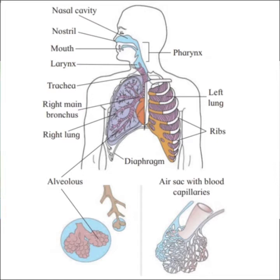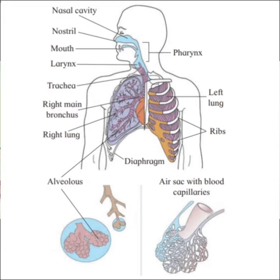Then the nose continues into the next part, that is the pharynx. This pharynx is again divided into three parts. The first one is known as the nasopharynx, which continues into the oropharynx. The oropharynx is a common passage for food and air, and it continues into the laryngopharynx. In between the nasopharynx and oropharynx there is a palate bone. The pharynx also has a set of lymphoid organs known as tonsils.